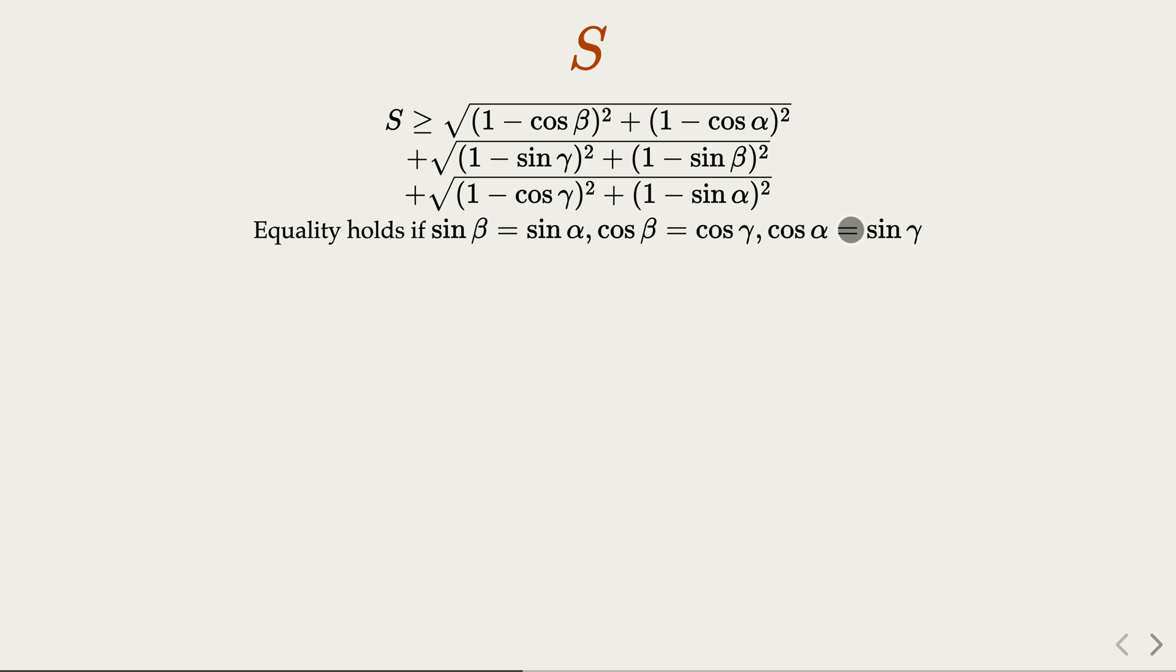Now, how to proceed further? Here we use a consequence of AM-GM inequality. This is a less known form of AM-GM inequality here. We claim that a squared plus b squared is greater than one half of a plus b squared. Another fact we're going to use is that sine x plus cosine x equals square root of 2 sine x plus pi over 4, and that is bounded by square root of 2. So we're going to apply this inequality to the three individual terms. Square root of this square is simply a plus b.